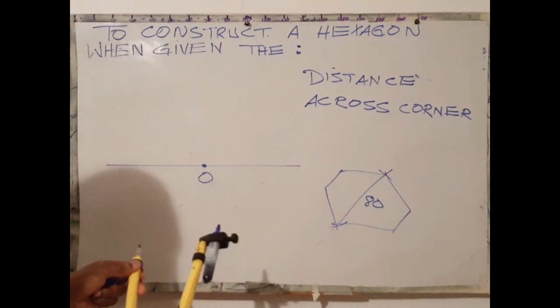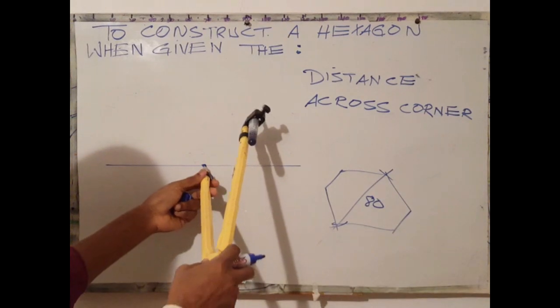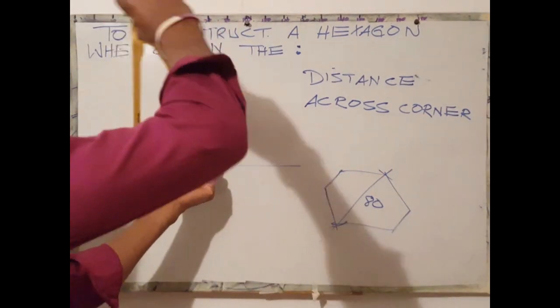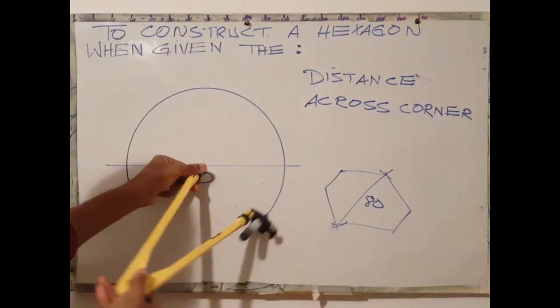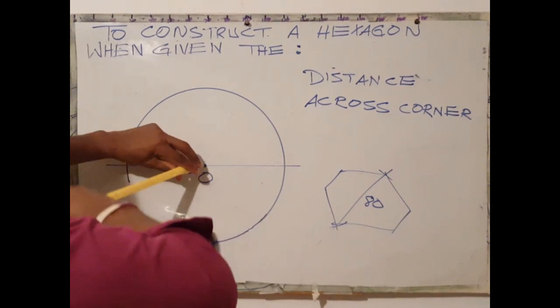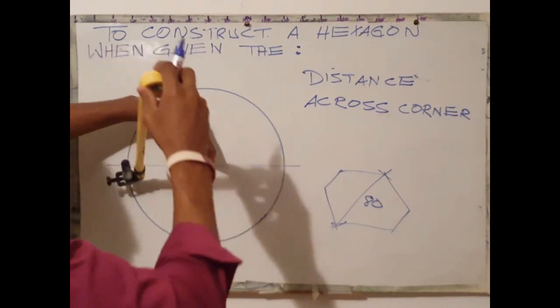Given that the diameter is 80 millimeters, open your compass to 40 millimeters which is the radius of a circle. Then draw a circle using O as center.